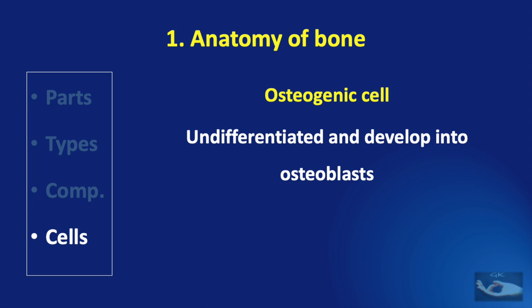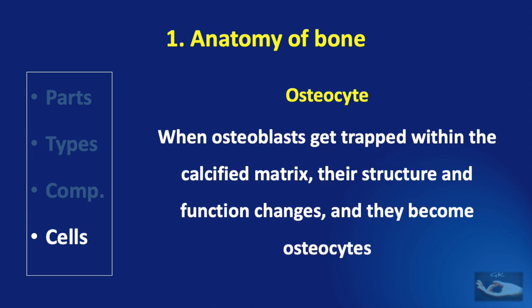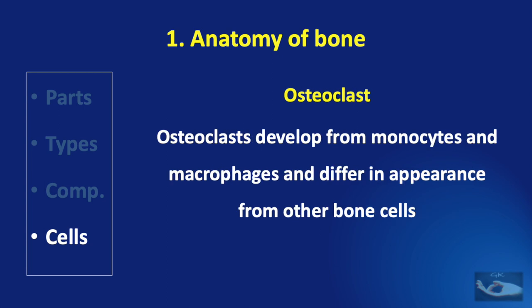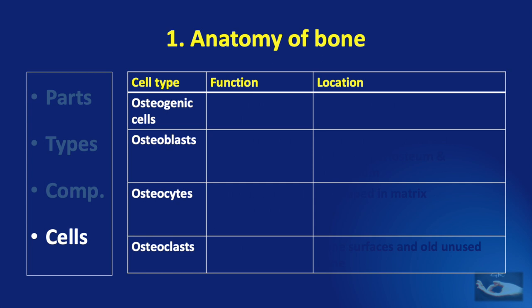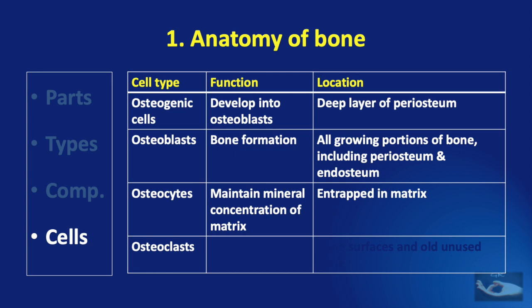The osteogenic cells are undifferentiated and develop into osteoblasts. The osteoblast continually forms new bone. When osteoblasts get trapped within the calcified matrix, their structure and function changes and they become osteocytes. Osteoclasts develop from monocytes and macrophages and differ in appearance from other bone cells. Comparing these cells: osteogenic cells develop into osteoblasts and are located in the deep layer of the periosteum. Osteoblasts function in bone formation and are located in all growing portions of bone including the periosteum and endosteum. Osteocytes maintain mineral concentration of the matrix and are found in lacunae entrapped in the matrix. Osteoclasts are important for bone resorption and are found on bone surfaces and old unused bone.